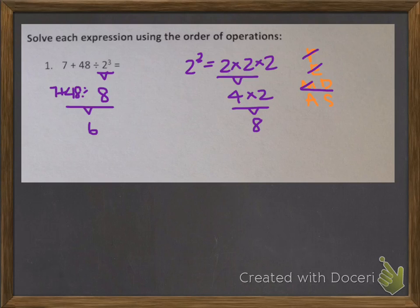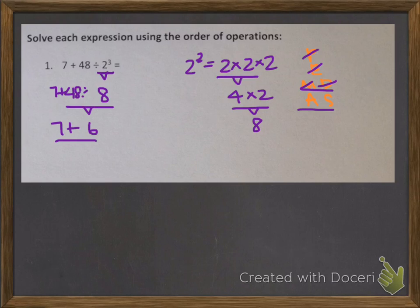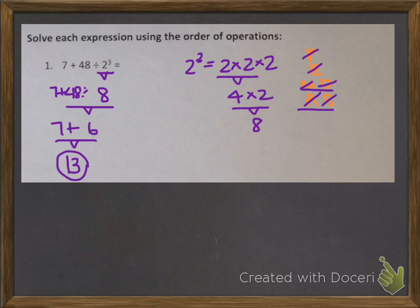That's not the answer to the problem yet because we still have that 7 plus at the front, so we bring it down to this line. Is there any more multiplication or division? No, so we cross off M and D and move on to addition and subtraction. There's only a plus sign, so 7 plus 6 is 13. We've checked all our steps, made sure we went in the correct order, and our answer is 13.